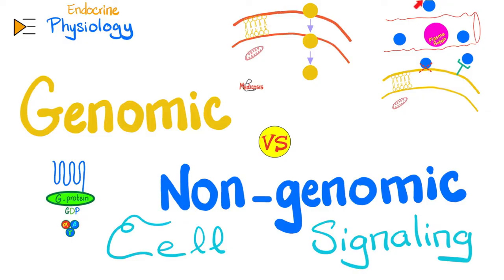However, if I am a water-soluble hormone, I cannot cross the lipid bilayer membrane. Which means you have to put the receptor on the outside, not on the inside, because I cannot enter. Then this receptor will communicate with the nucleus. How? You need a middleman — a second messenger. The hormone is the first messenger, the second messenger is the middleman, and you reach the nucleus. Did the water-soluble hormone reach the nucleus directly? No. Hashtag non-genomic action.